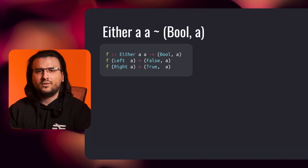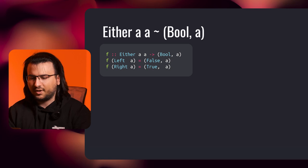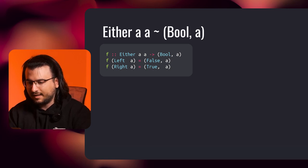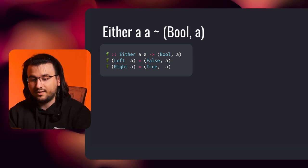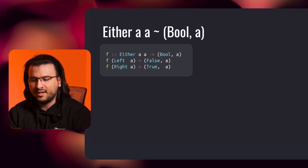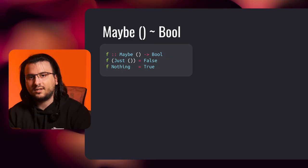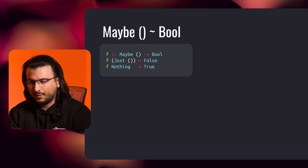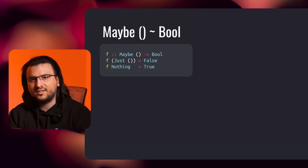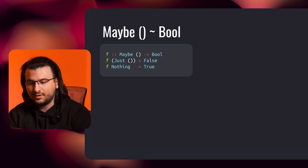Thus, finishing off this proof, let's look at a couple of examples of isomorphic types. A pair of bool and a is isomorphic to either a a — both have cardinalities equal to two times a, and we can manually construct a bijection. Maybe unit is isomorphic to bool — both have cardinalities equal to two. Our bijection sends just unit to false and nothing to true.